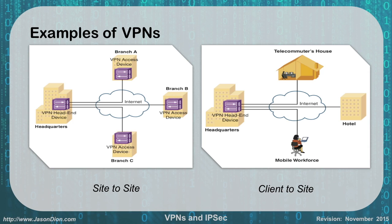Looking at some examples of VPN: the site-to-site is on the left, where you can see the entire company's branches A, B, and C are connecting back into headquarters. So anytime that branch B, for instance, wants to go out to the internet, what's going to happen is they're going to send their traffic back to headquarters and then out to the internet — that way they get the protections that the corporation has.